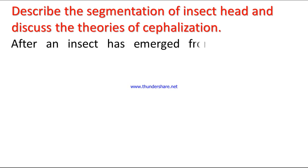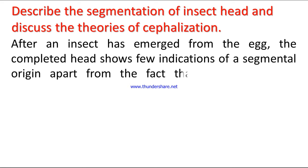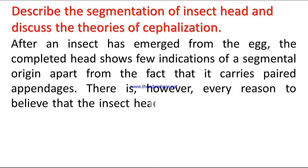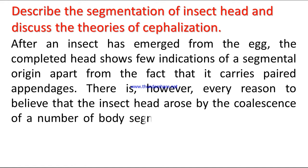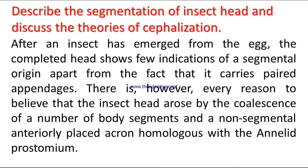After an insect has emerged from the egg, the completed head shows few indications of a segmental origin apart from the fact that it can carry paired appendages. There is however every reason to believe that the insect head arose by the coalescence of a number of body segments and a non-segmental anteriorly placed acron, homologous with the annelid prostomium.